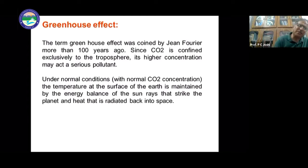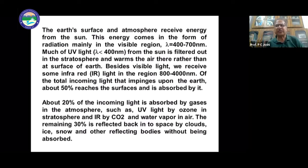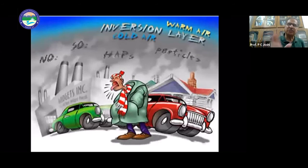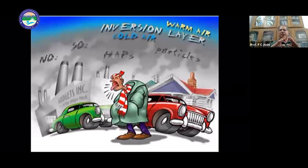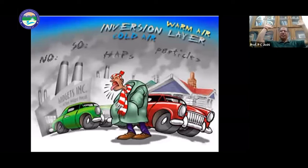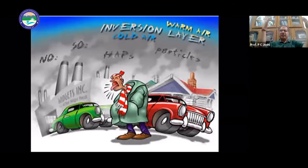CO2 and methane are very important contributors to global warming. As a result, a temperature inversion is happening — heat is not able to disperse in the atmosphere and is instead inverting, causing warming.